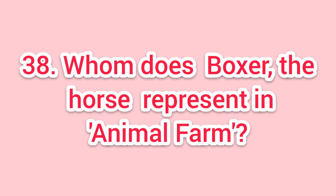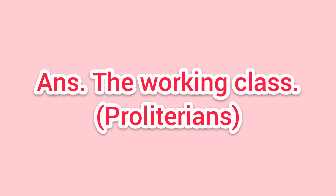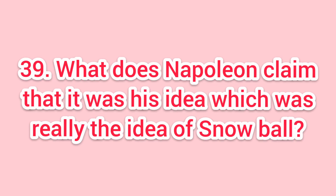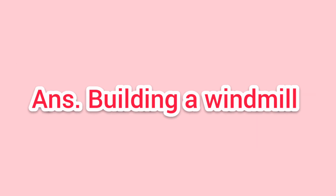Thirty-eight: whom does Boxer the horse represent in Animal Farm? Answer: the working class — the Proletarians. Thirty-nine: what does Napoleon claim was his idea, which was really the idea of Snowball? Answer: building a Windmill.